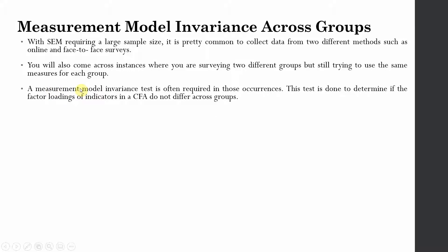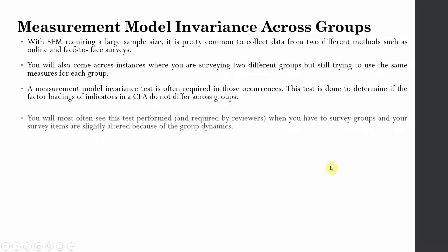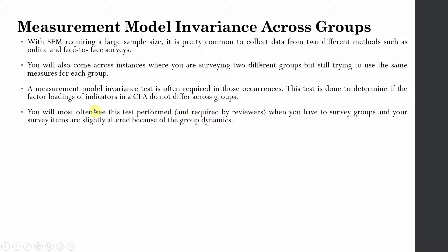A measurement model invariance test is often required in such cases when you have got different groups or data being collected through two different methods. This test is done to determine if the factor loadings of indicators in a CFA do not differ across those groups. You will often see this test required by reviewers when you have survey groups and your survey items are slightly altered because of the group dynamics.